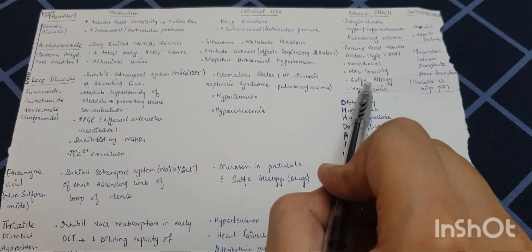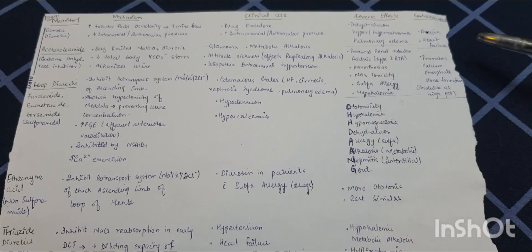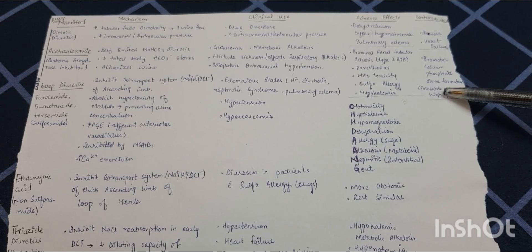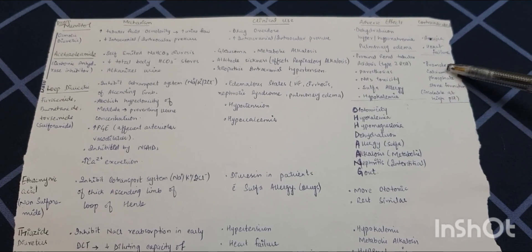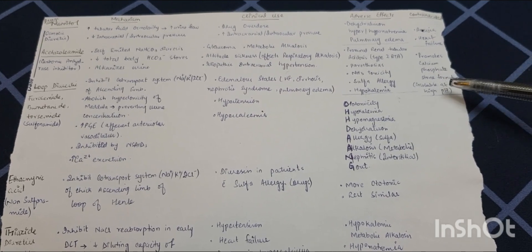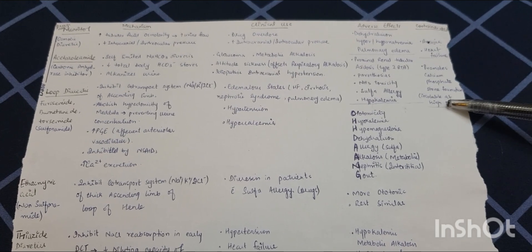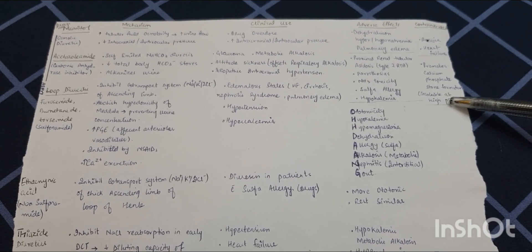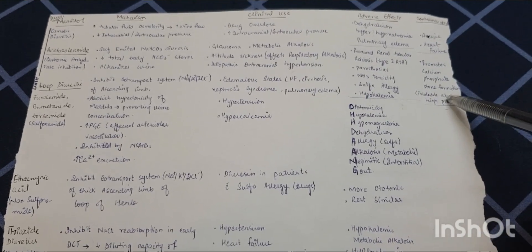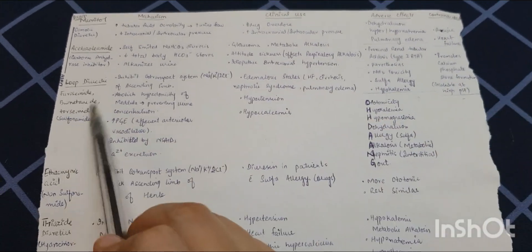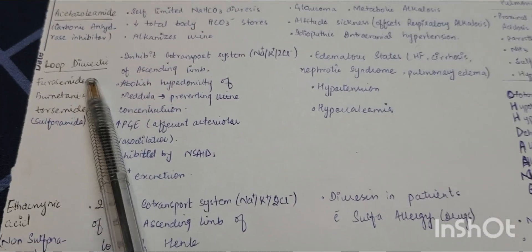Adverse effects of acetazolamide include proximal renal tubular acidosis (Type 2 RTA), paresthesias, ammonia toxicity, sulfa allergy (as it contains a sulfa group — giving it to a patient with sulfa allergy will cause a reaction), and hypokalemia. It is contraindicated where calcium phosphate stones are present, as it alkalinizes urine and promotes formation of calcium phosphate stones, which are insoluble at high pH.